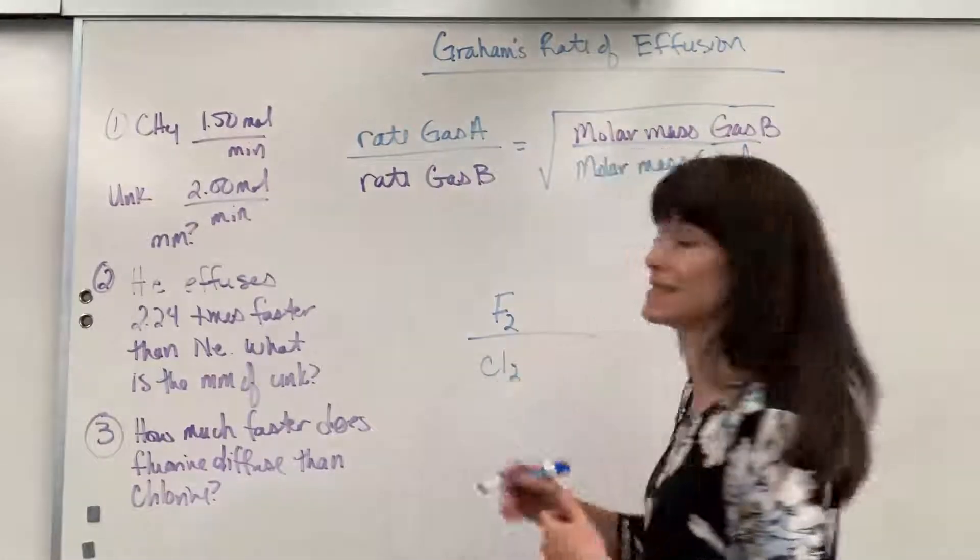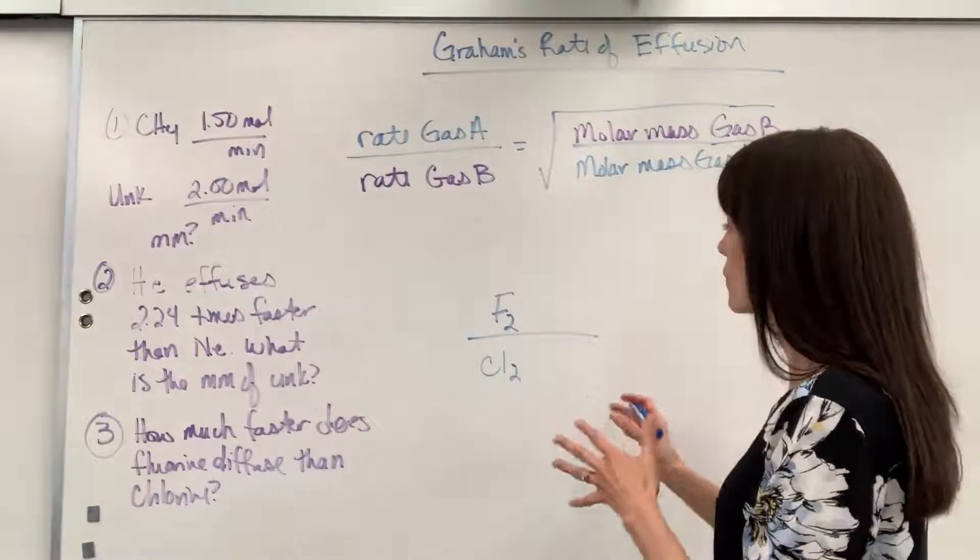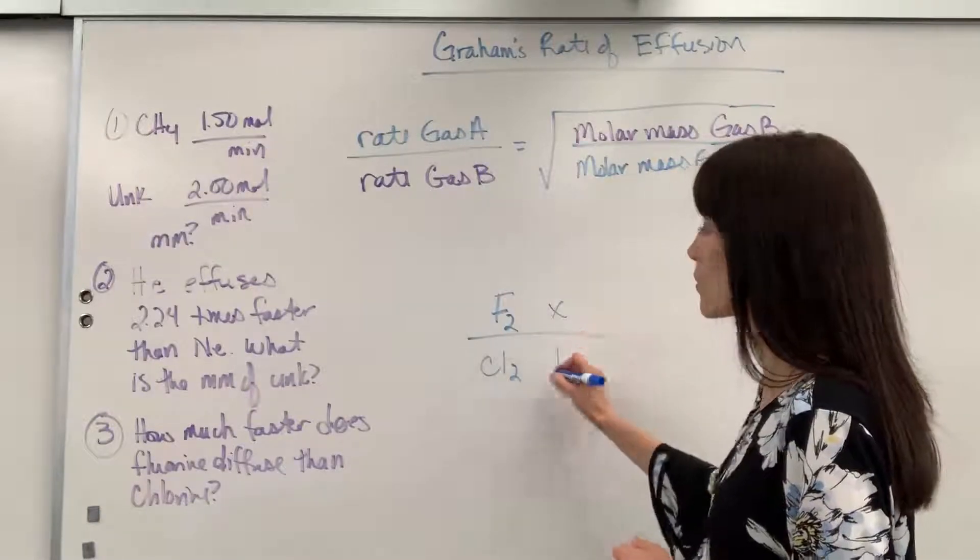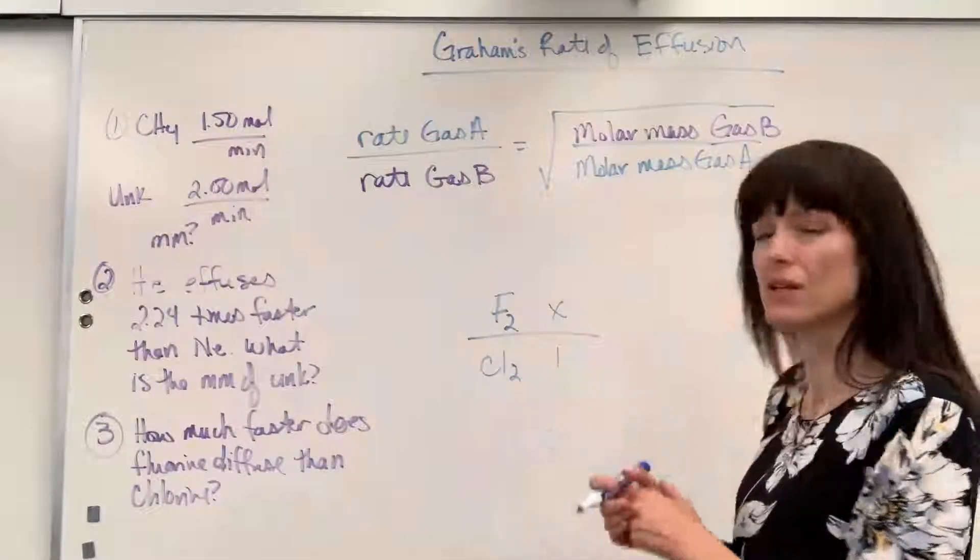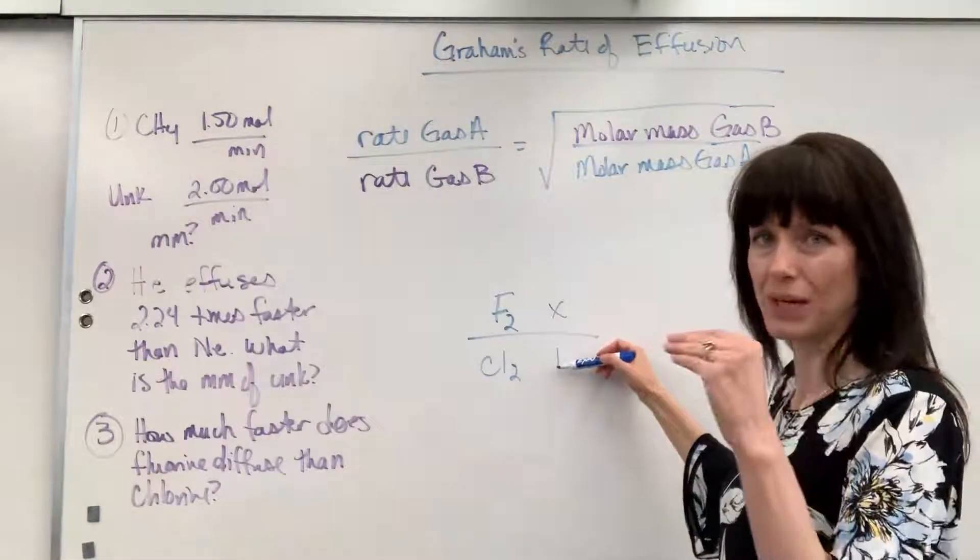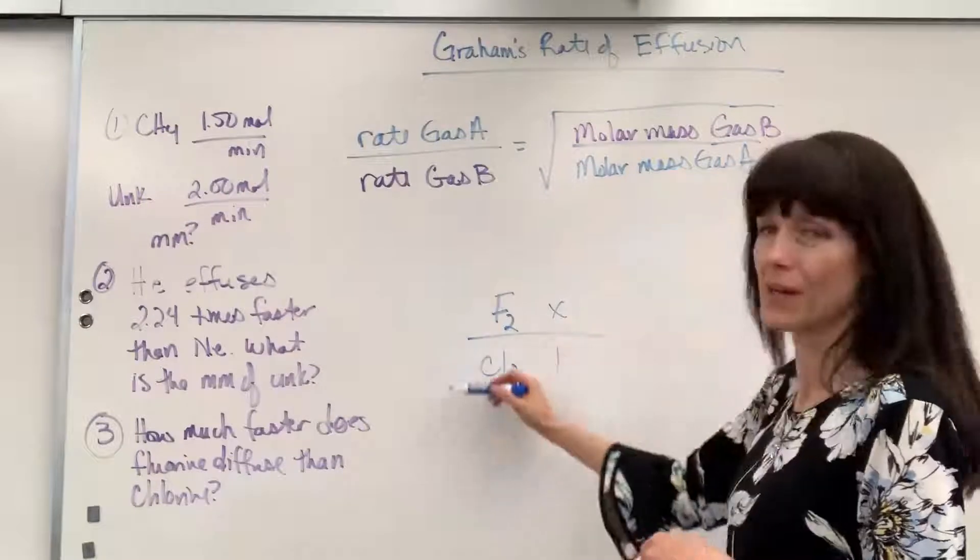Chlorine, diatomic, Cl2. And really what I'm looking for is some number over 1. Know that that's what we're looking for. How much faster does this diffuse in comparison to chlorine? So, this would be my 1. That would be my reference.